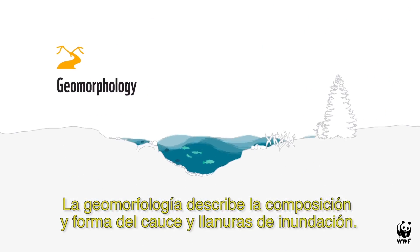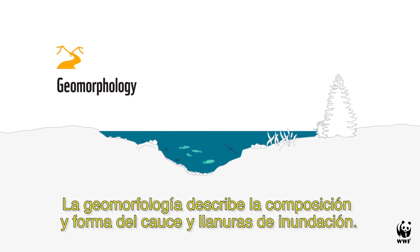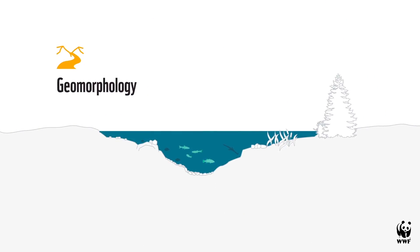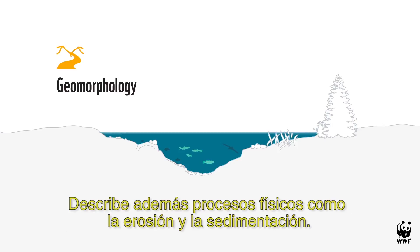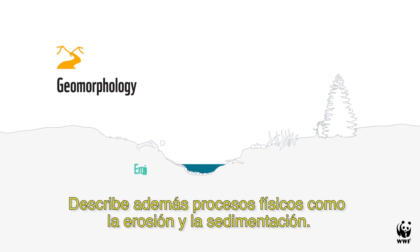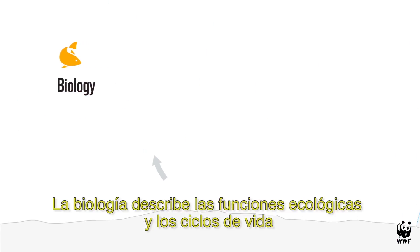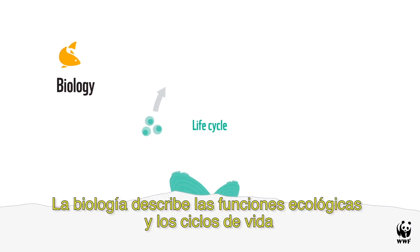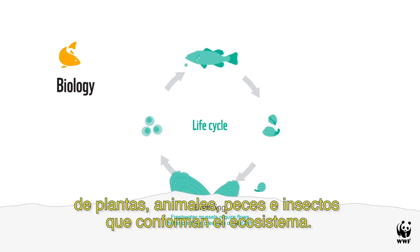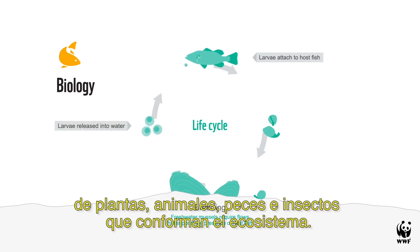Geomorphology describes the shape and composition of stream channels. It also describes physical processes such as erosion and sediment deposition. Biology describes the ecological functions and life cycles of the plants, animals, fish and insects who make up the ecosystem.